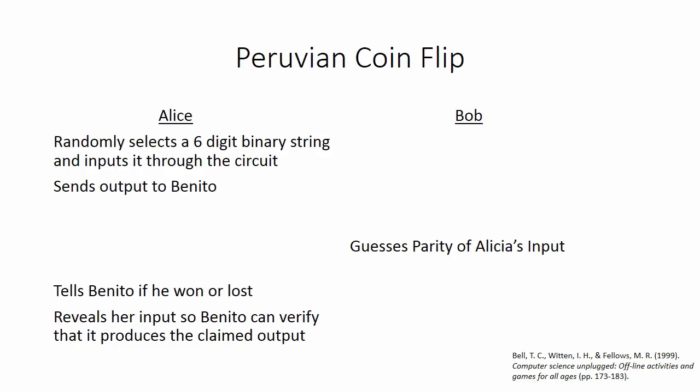Alice will choose a random six digit binary string and input it through the circuit. This will result in a certain output. Thus she sends this output to Bob, and Bob, with this output, tries to guess the parity of Alice's input.